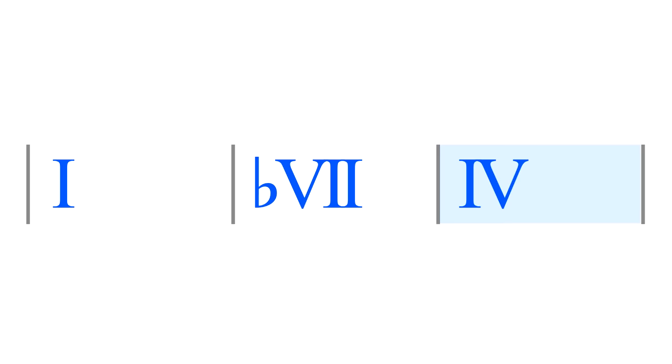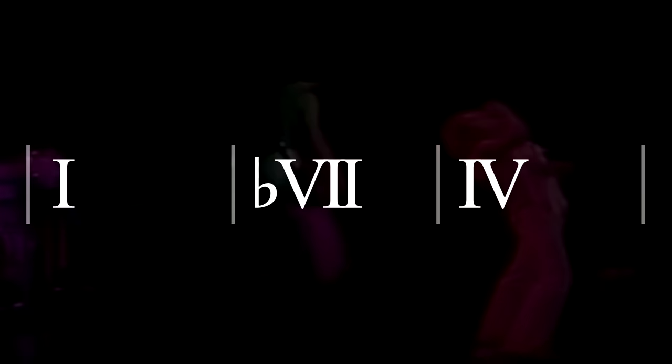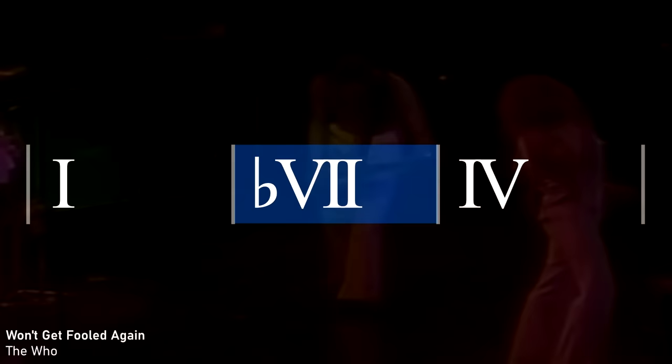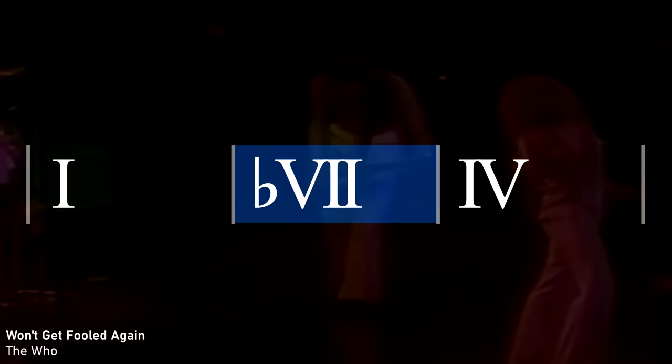A very common Mixolydian chord progression is 1, flat 7, 4, and then back to 1. We've already seen this progression today in Royals and in Sweet Child of Mine, but there are plenty more examples we could look at.